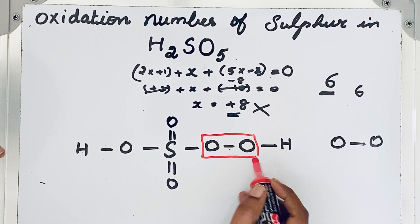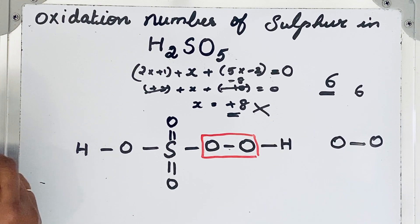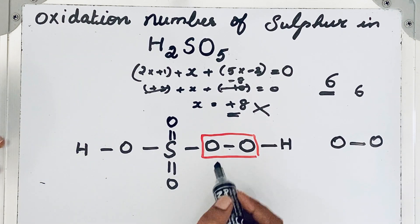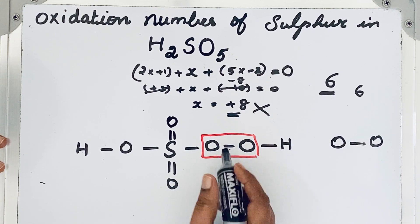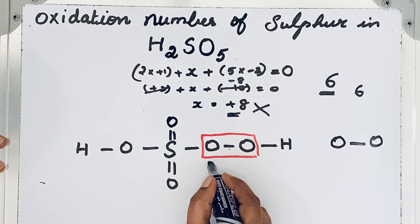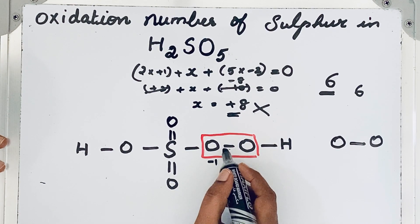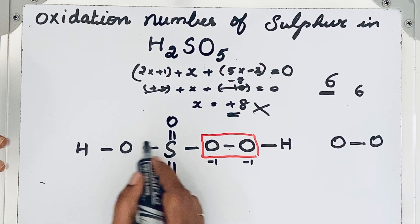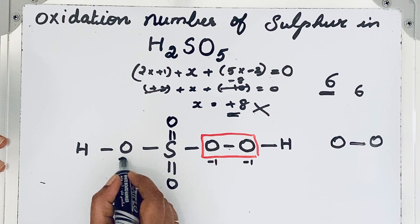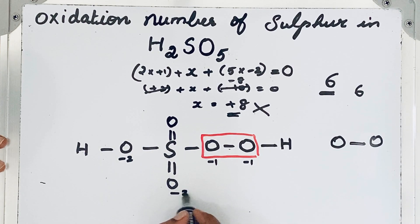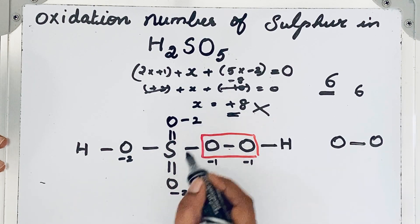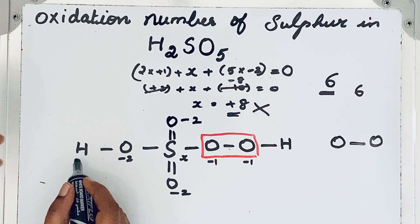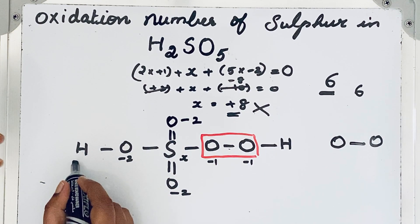According to guidelines, if it is a peroxide then oxidation number of oxygen is minus 1. So for this oxygen oxidation number is minus 1, for this oxygen also minus 1. But remaining 3 oxygen atoms, oxidation number is minus 2. Sulfur we don't know, so let us keep it like x. What about that? For hydrogen, hydrogen plus 1 only.